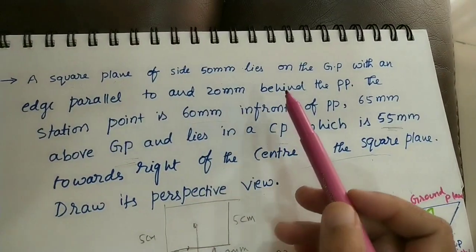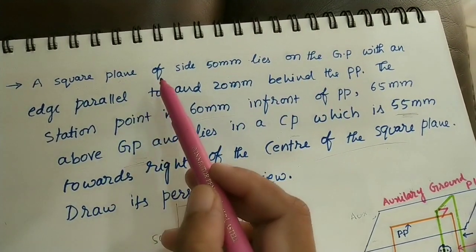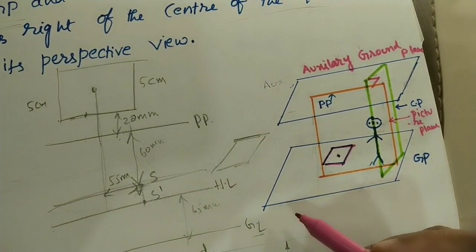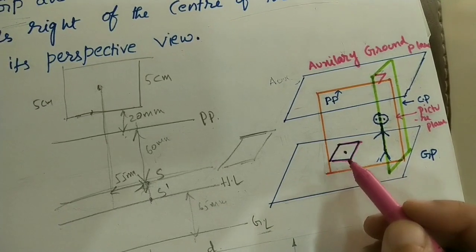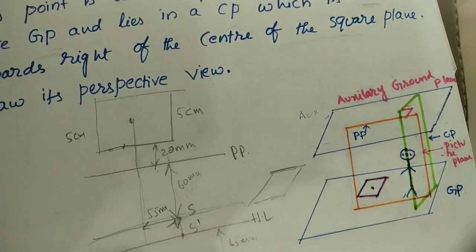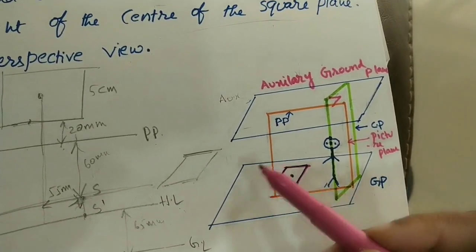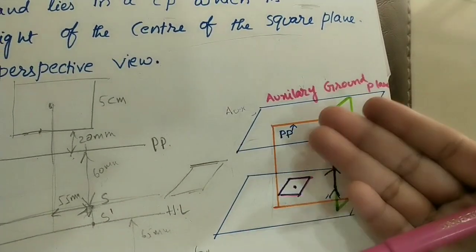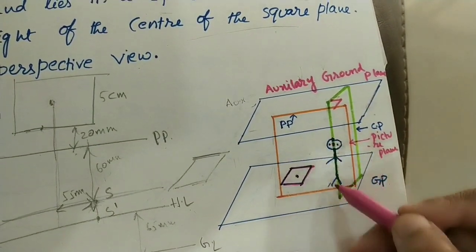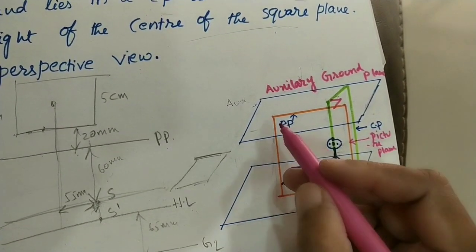From the given data: one of the edges is parallel to and 20 mm behind the PP. One edge of the square plane is parallel to the picture plane. This square plane is behind the picture plane — 20 mm behind the PP. In front of it, the observer is standing. Behind this plane, the square plane is there, with one edge parallel to the PP. The observer can see this square plane through the transparent picture plane.